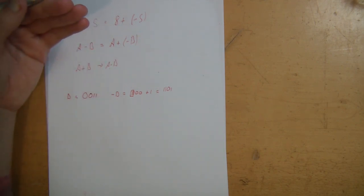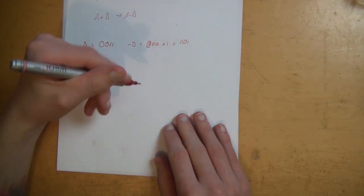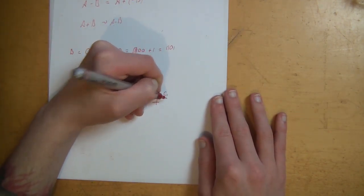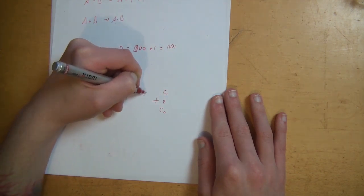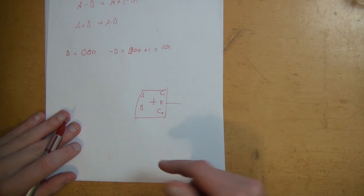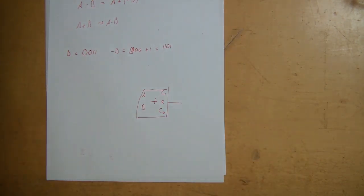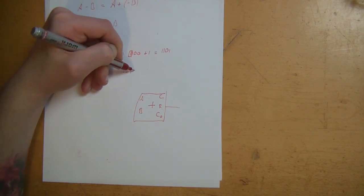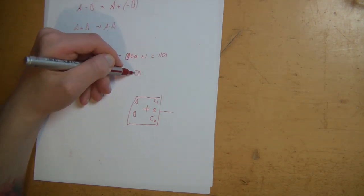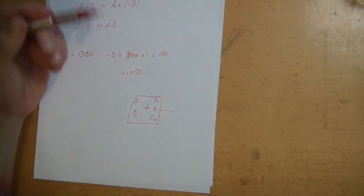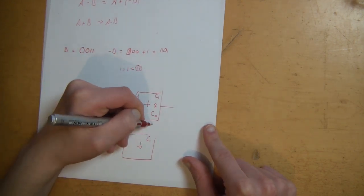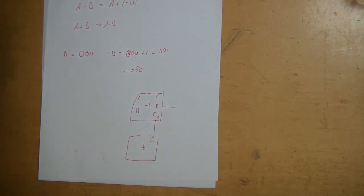That means we can now subtract two binary numbers using what is called an adder. We already had an adder from the last episode. An adder adds two binary numbers, and it has a carry in, carry out, result, and A and B inputs. The carry out occurs when, for example, 1 plus 1 equals 2, which overflows a single bit. The carry in is the carry out from the previous adder — you chain them together so each bit's carry out feeds the next bit's carry in.